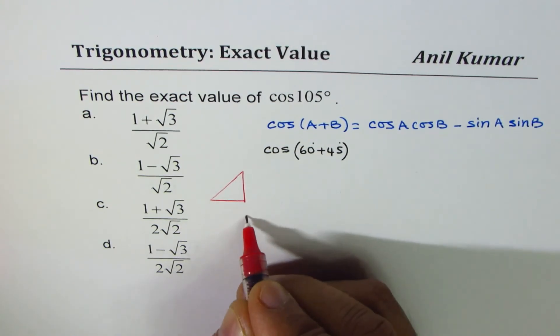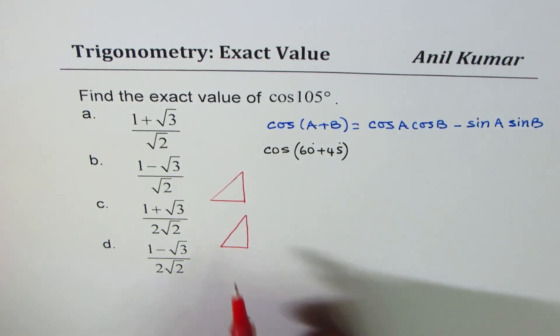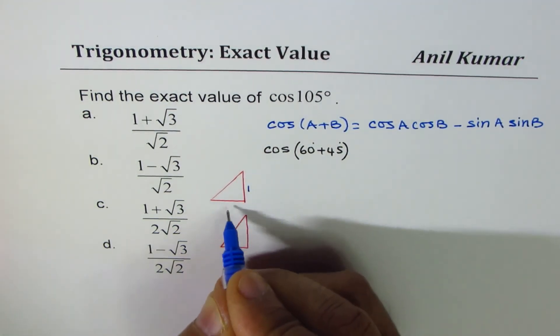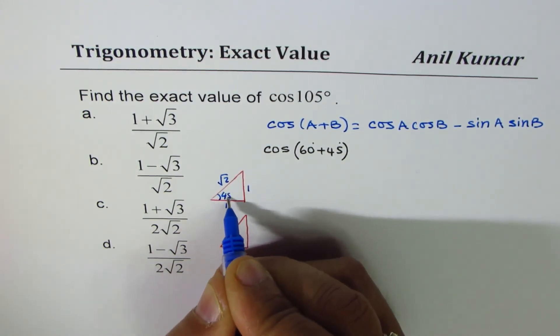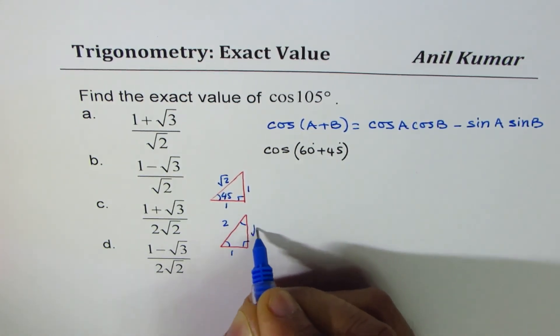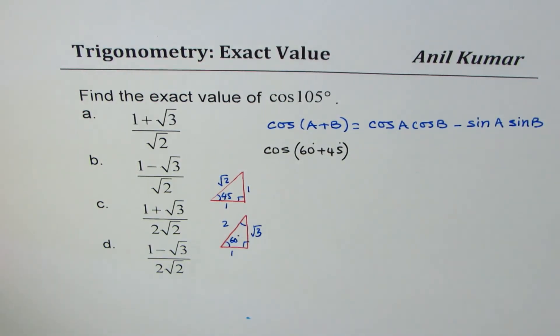45 degrees is the triangle where these sides are 1, 1, square root 2, and 60 degrees is one where the sides are 1, 2, square root 3 where this is 60 degrees. We are going to use these two special triangles.